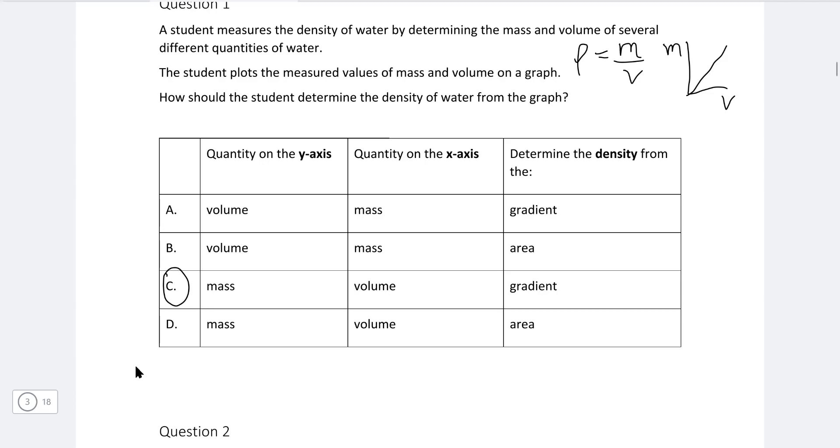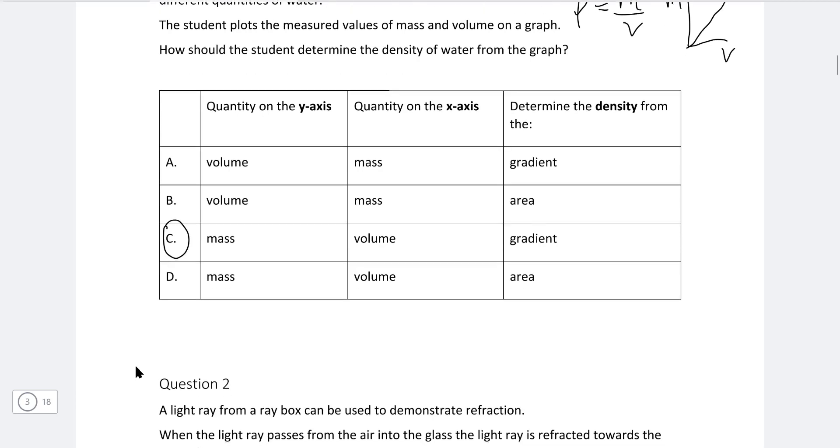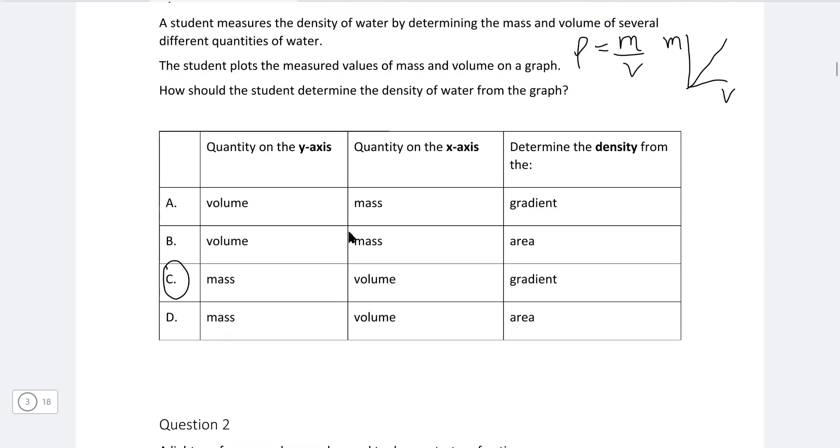Another way to think about this is to rearrange this equation for m. So mass is equal to density times volume and we can compare this to the graph of y equals mx plus c. This is the equation of a straight line, and if m is on the y-axis and v is on the x-axis, the graph will be a straight line through the origin and what's left for the gradient is the density.